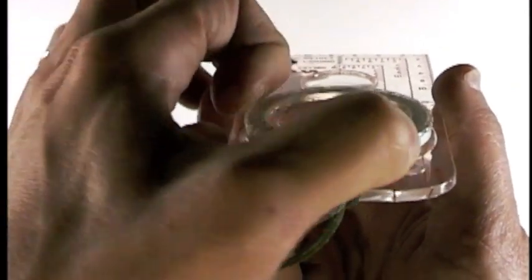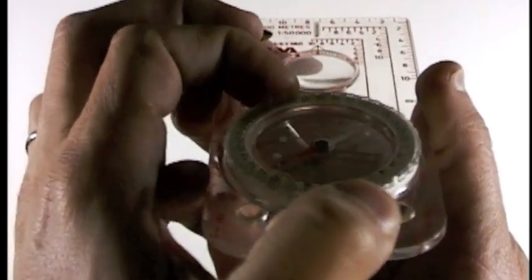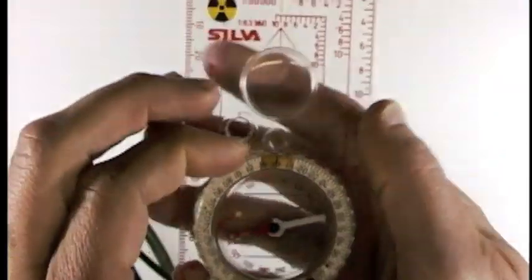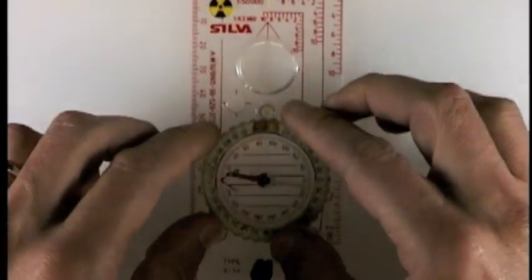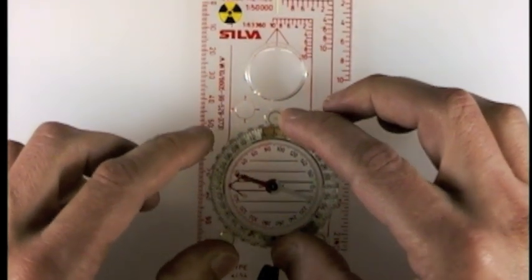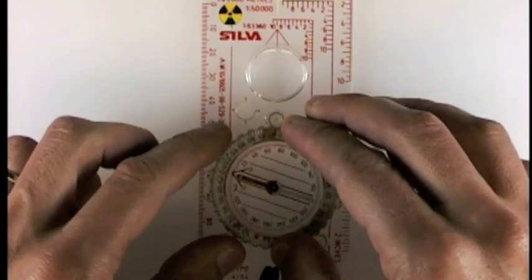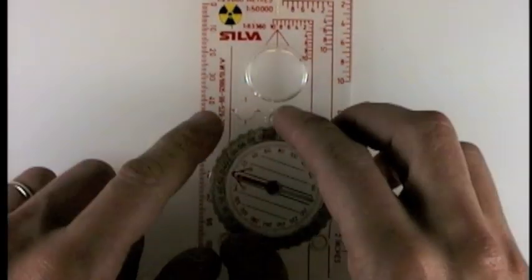Then you turn the capsule until it aligns with the needle, which isn't going to work here but I'll demonstrate it flat, and you turn the capsule until it aligns up with the needle. Simple.